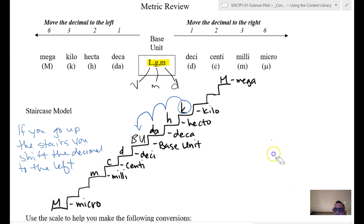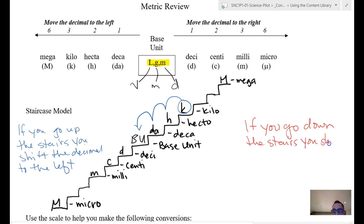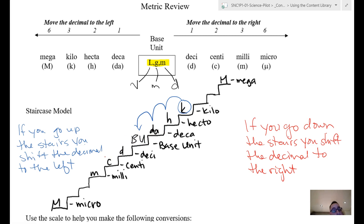A good rule: if you go up the stairs, you shift the decimal to the left — you're going from something small to something large, so your number gets smaller. If you go down the stairs, you shift the decimal to the right — your number gets larger. For example, one kilometer is 1,000 meters, but one meter is 0.001 kilometers. You can use the linear scale at the top or the stairs — I like the stairs because you can start anywhere.